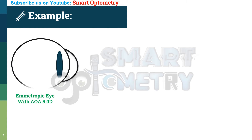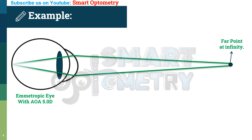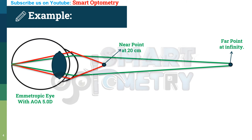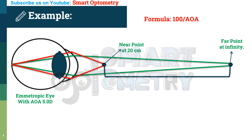Suppose an emmetropic patient has an amplitude of accommodation of 5 diopters. The far point will be at infinity, and the near point of accommodation will be 100 divided by 5, or 20 cm. The formula to find the near point of accommodation is 100 divided by amplitude of accommodation. So the range of accommodation for this patient is 20 cm from the eye to infinity.